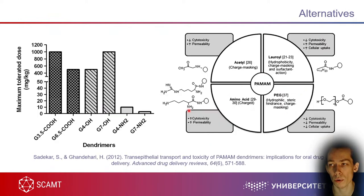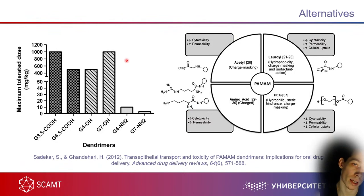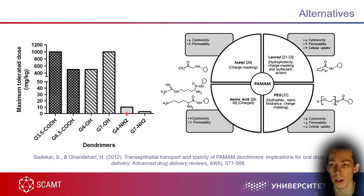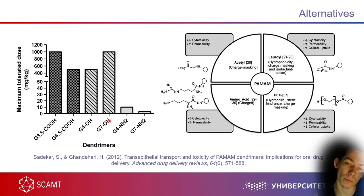If you still want to use PAMAM in your application, there are additional modifications available. However, modifications can be tricky — for example, adding NH2 groups can make some PAMAM structures highly toxic when they were not before. This is why in every case, when you functionalize your particles — whether modifying PEG or PAMAM — you must check toxicity, because it can change dramatically even by swapping one functional group for another.